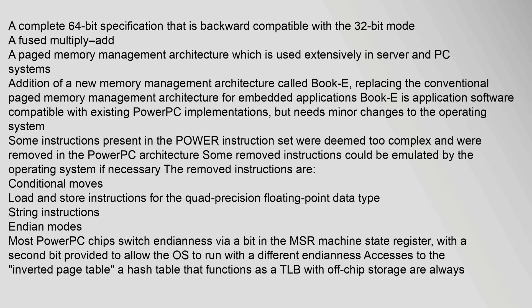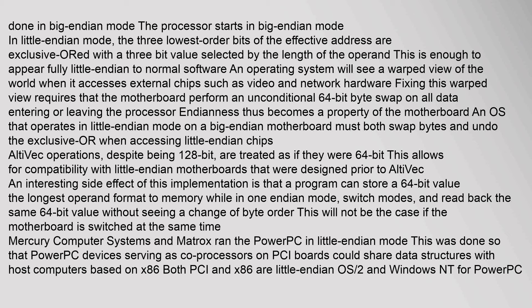Most PowerPC chips switch Endianness via a bit in the MSR (machine state register), with a second bit provided to allow the OS to run with a different Endianness. Accesses to the inverted page table — a hash table that functions as a TLB with off-chip storage — are always done in Big Endian mode. The processor starts in Big Endian mode. In Little Endian mode, the three lowest-order bits of the effective address are exclusive-ORed with a 3-bit value selected by the length of the operand. This is enough to appear fully Little Endian to normal software.